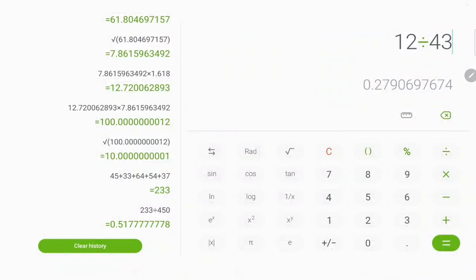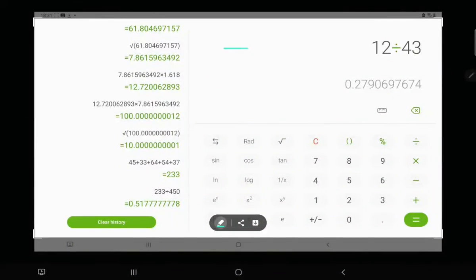We have 0.5 minus 0.2 plus 0.279. That's 0.3 plus 0.279, which will be equal to 0.579. Thank you everyone.